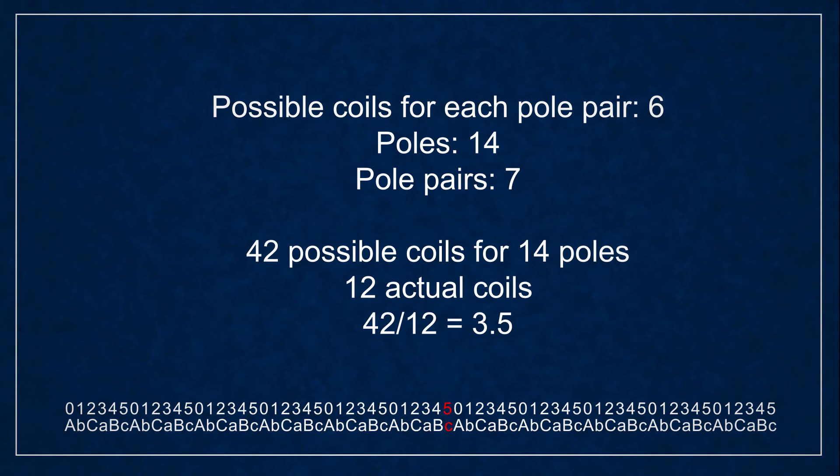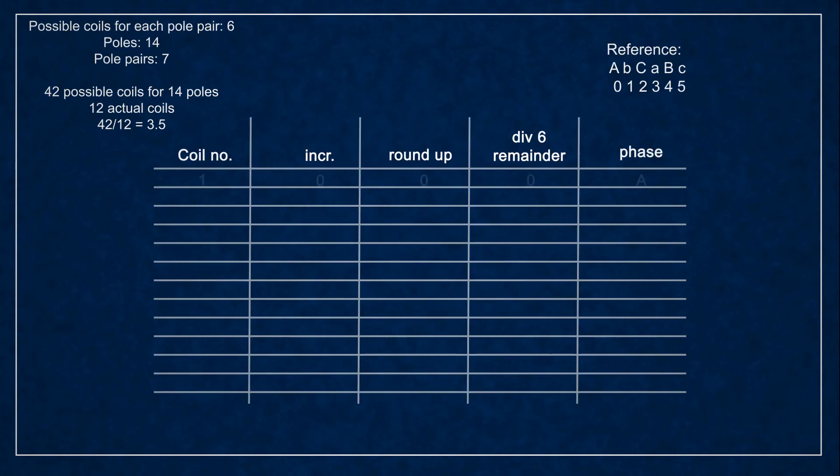The key here is that when you iterate over your coils you add up the positions with the fractional step and round the results afterwards. So for 12 coils it looks like this.